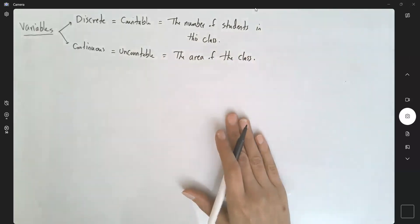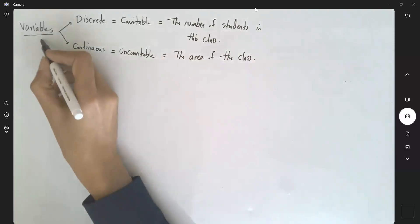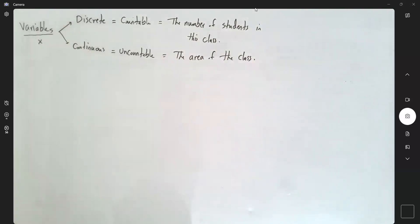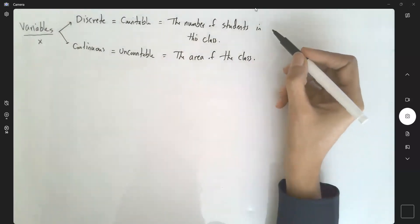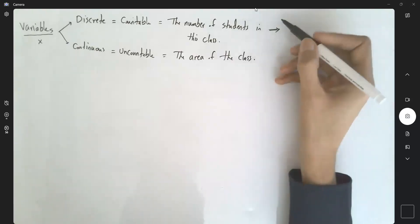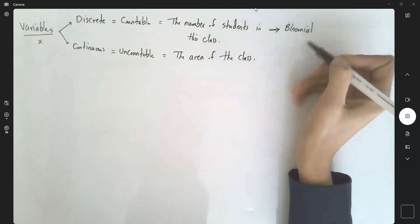For each one of these variables, they have probability distributions. A random variable is denoted by x. For a discrete random variable,